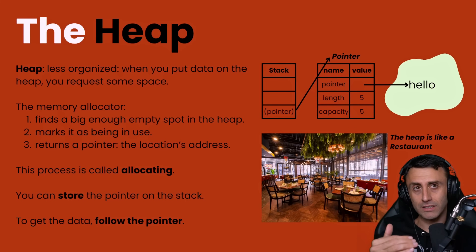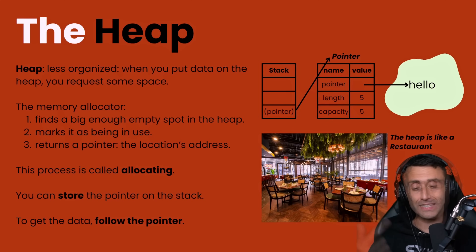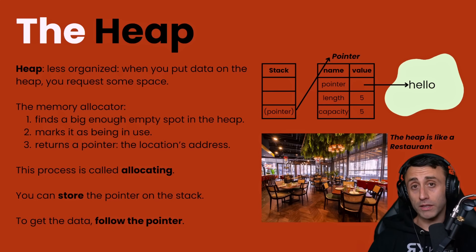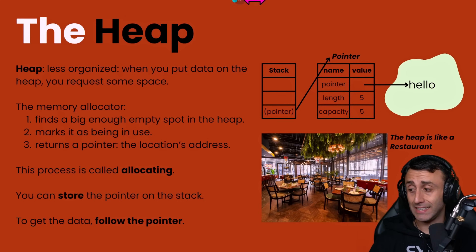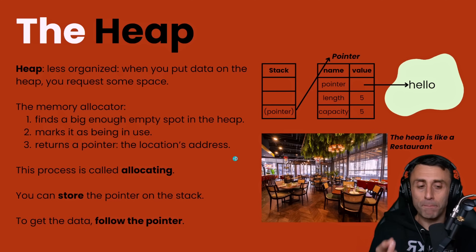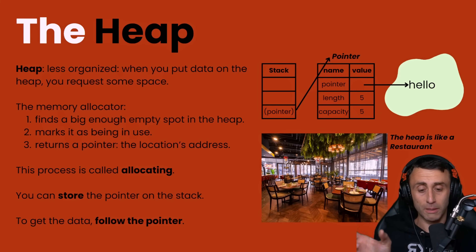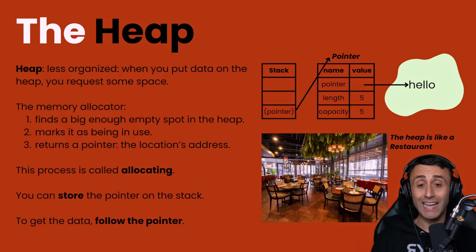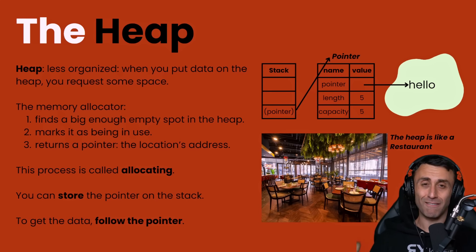A strong analogy here is a restaurant: if you go with three friends, they find a table of the right size, mark it as in use, and give you a table number — that's your pointer. Something super interesting: you can store the pointer to the heap in the stack, because a pointer has a fixed amount of data that won't change during execution. A pointer is perfect to be stored on the stack, and to get the data you simply follow the pointer.